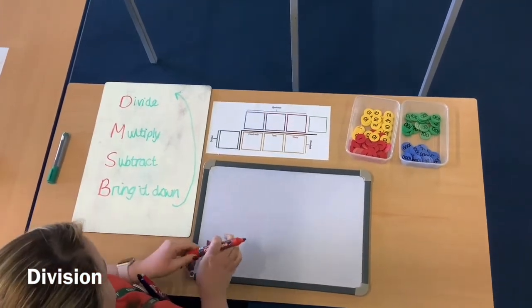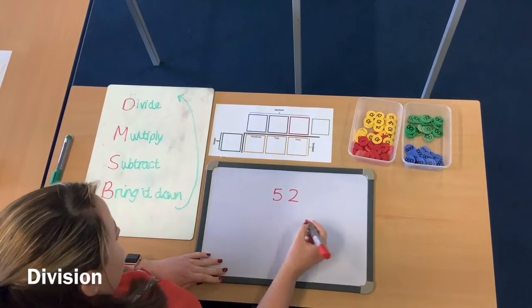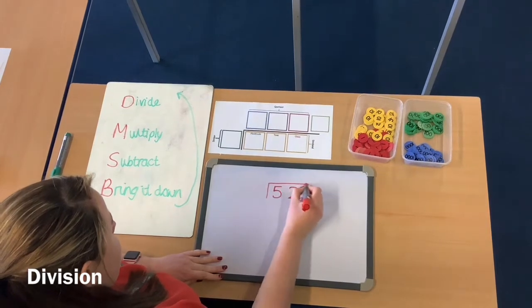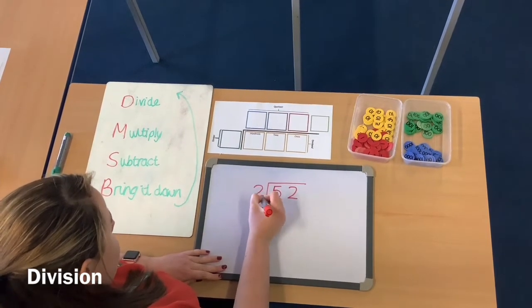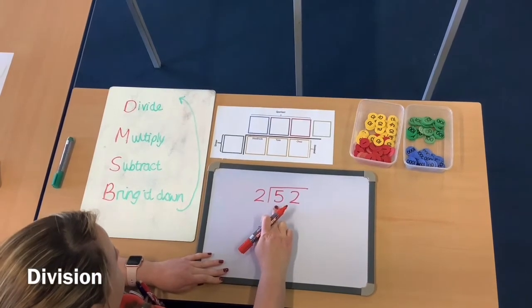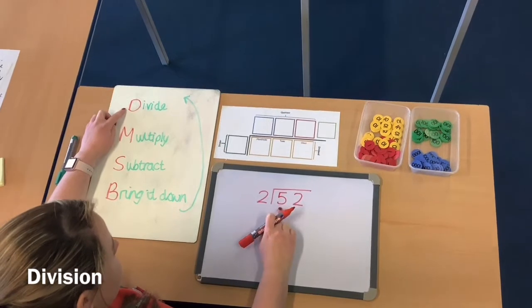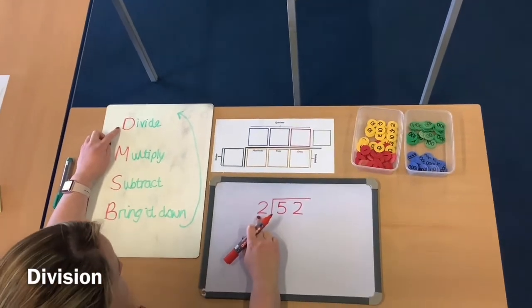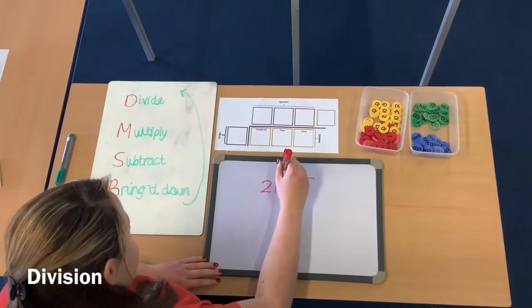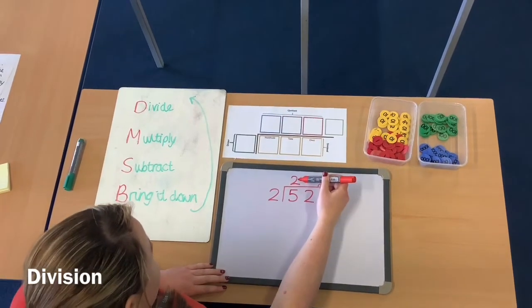the first calculation we're going to have a look at is 52 divided by 2. So 52 is my dividend, and I'm dividing that by 2. First thing I'm going to do is look at my tens. So I've got 5 tens, and I'm going to follow step 1, which is divide. So I'm going to divide 5 tens by 2, which is 2. And I'm going to put that in my quotient.